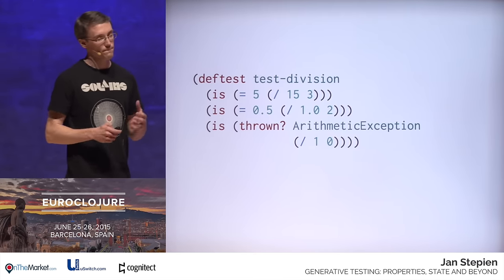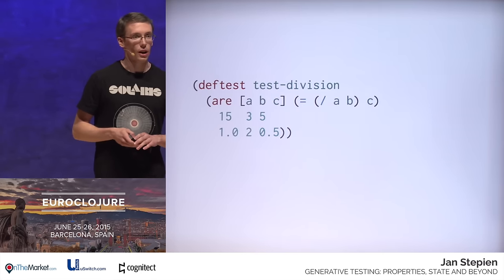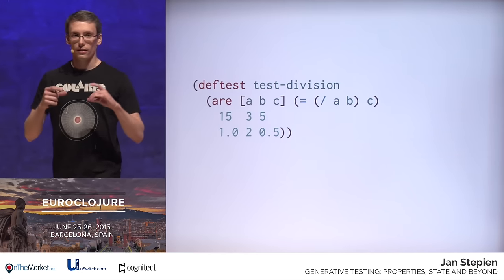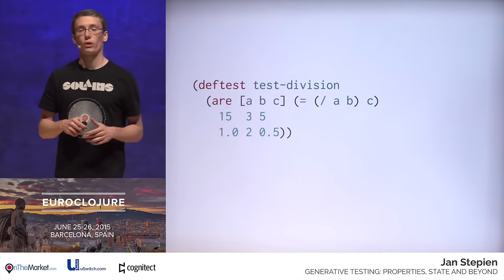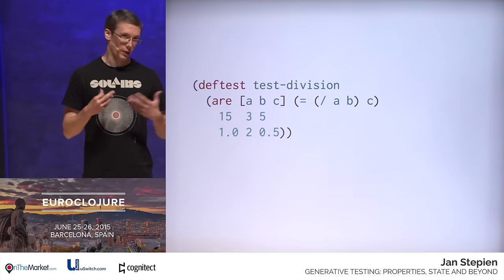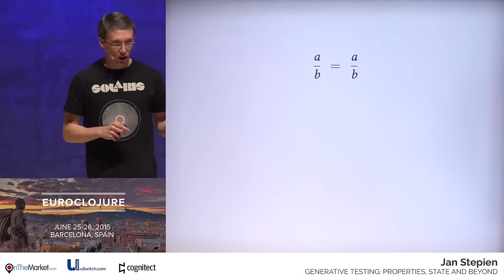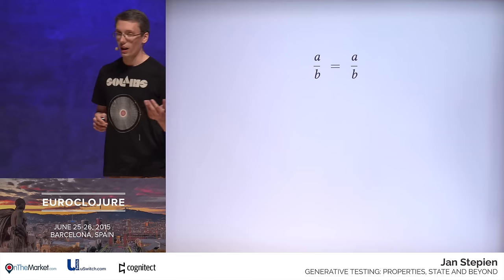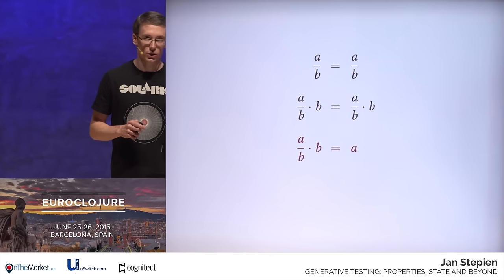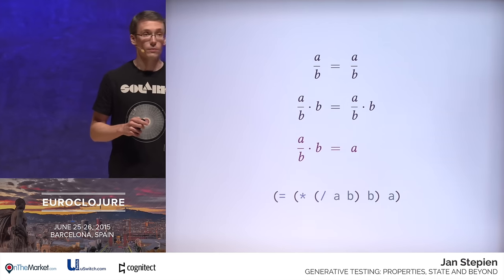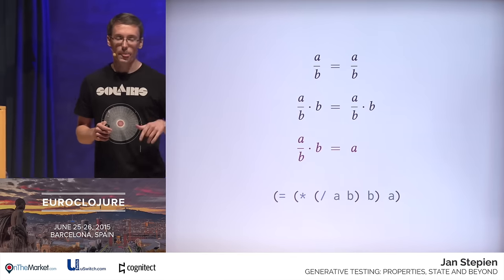Instead, let's see how we can refactor this test a bit. If we forget about the arithmetic exception case, we can use the `are` macro and extract the test expression to one line, then just keep specifying more and more input values until we're sure that our implementation is right. Now let's do some mathematics. A over B equals A over B. Let's multiply both sides of this equation by B and simplify the right side. If we express this equation in plain English, we end up with something which looks as follows — a property. This property should hold for division in general.